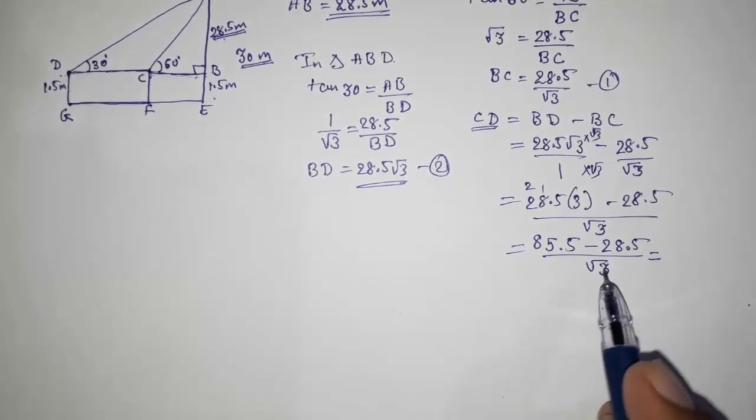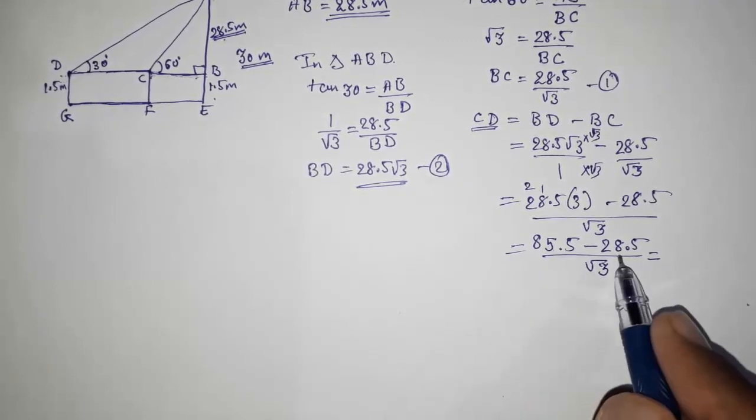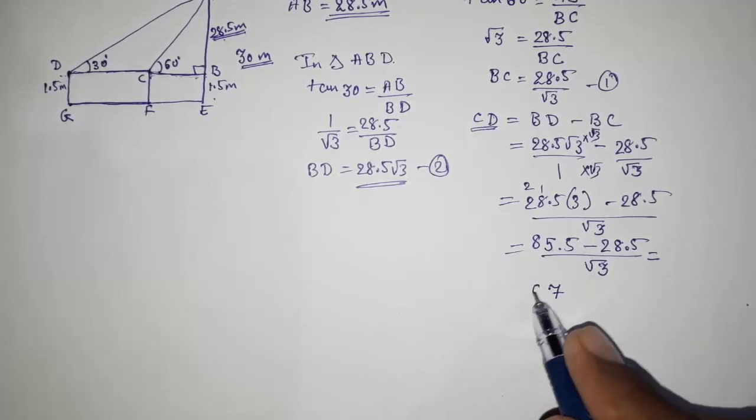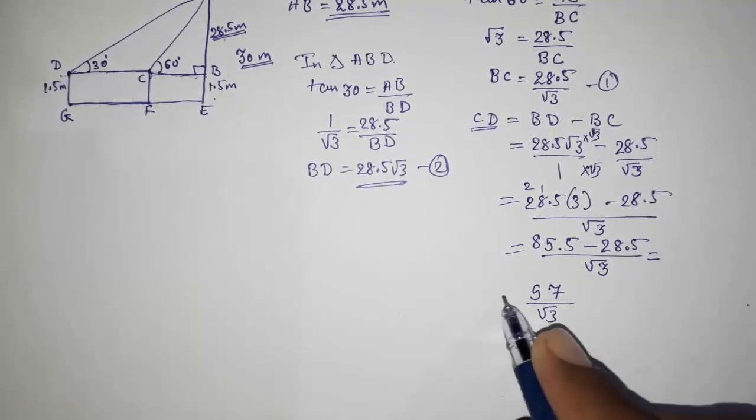So what will happen again? You can subtract: 0, 15 minus 8 is 7, and 8 minus 2 is 5, so 57 by root 3. This will be our answer. Again we have to rationalize this.